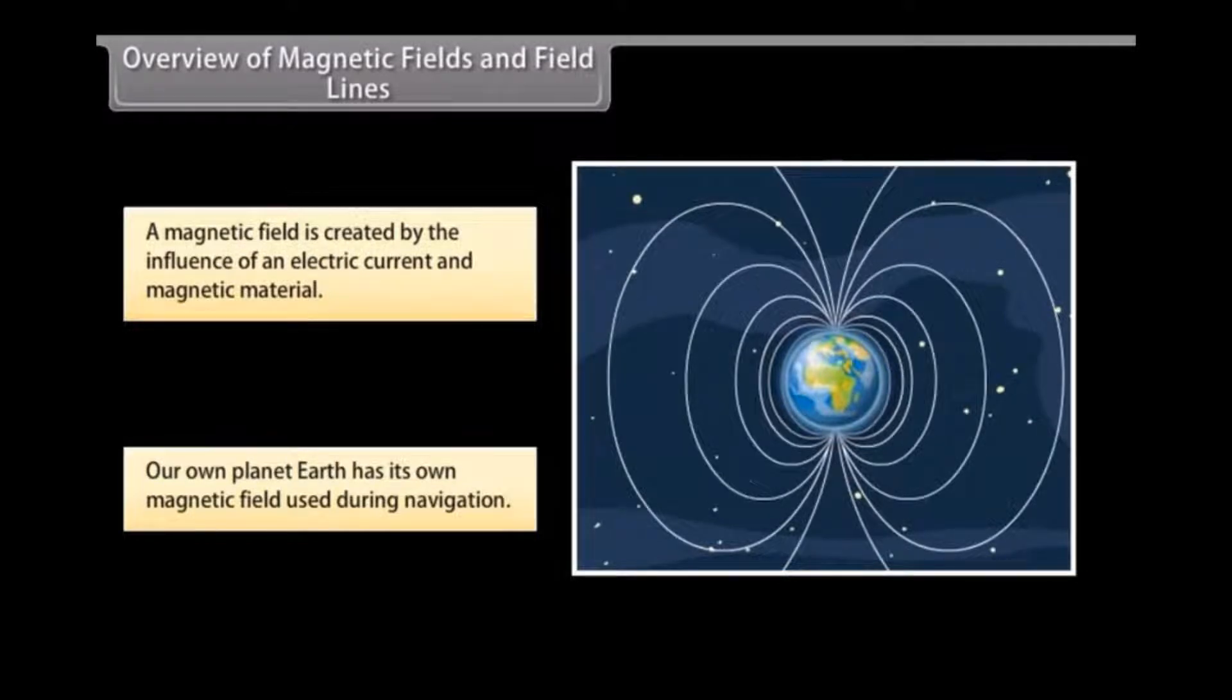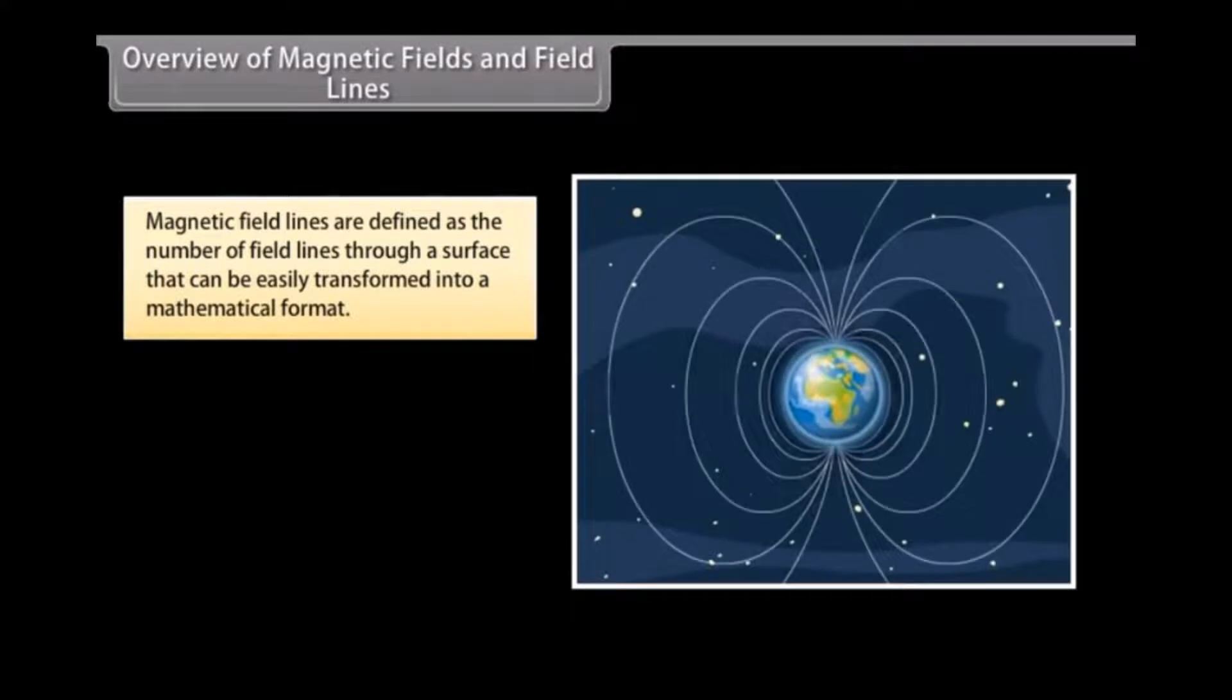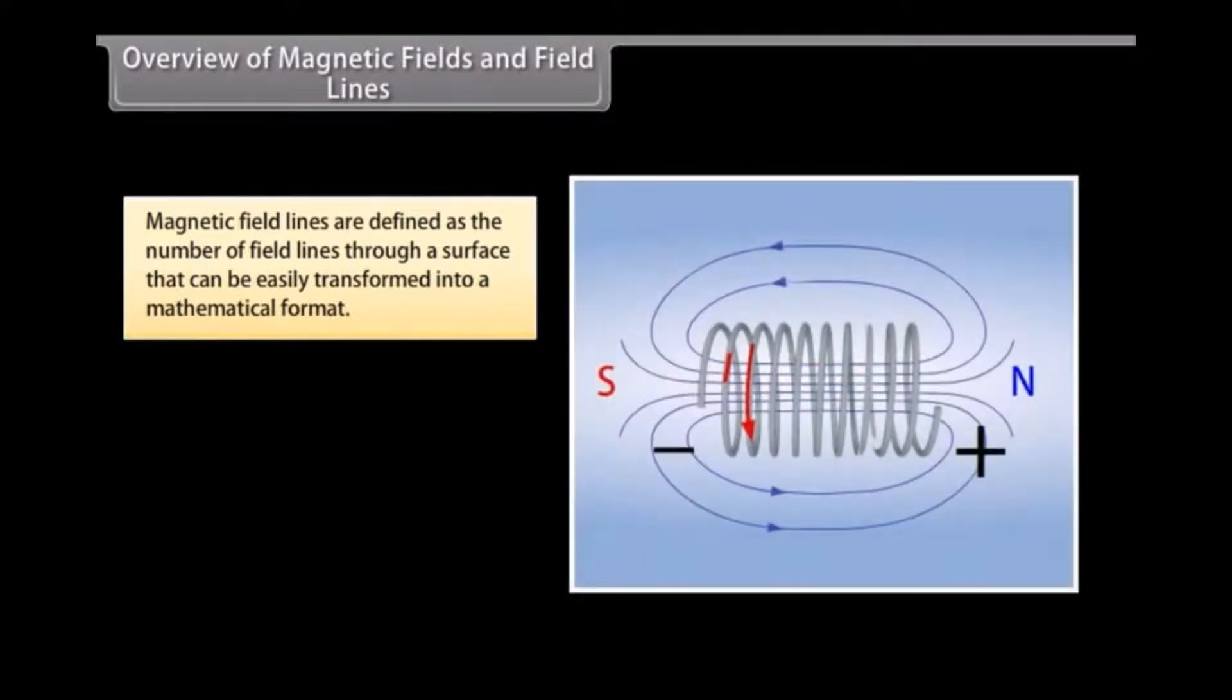Magnetic fields are also used in electric devices such as transformers. Magnetic field lines can be compared to the constant altitude lines that are visible on a map. Magnetic field lines help in stating simple concepts of magnetism easily. These are defined as the number of field lines through a surface. These can be easily transformed into a mathematical format.